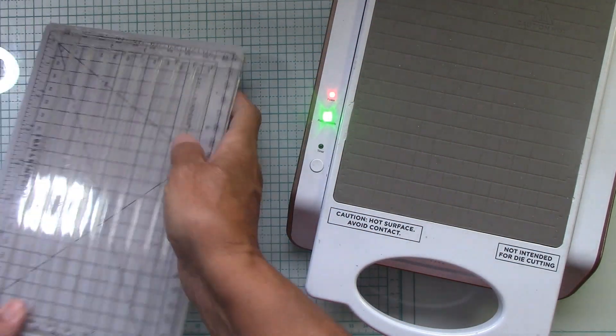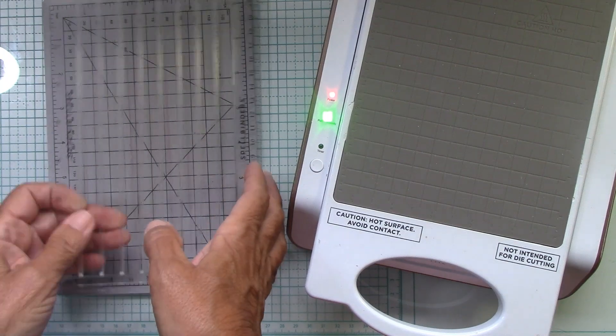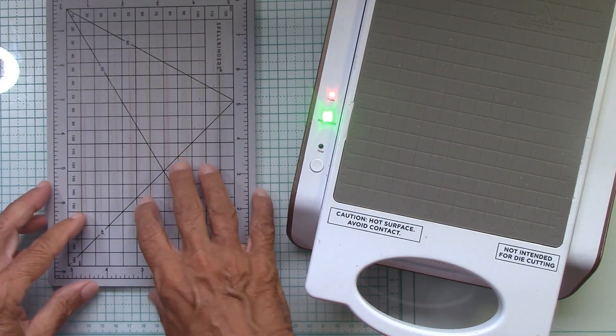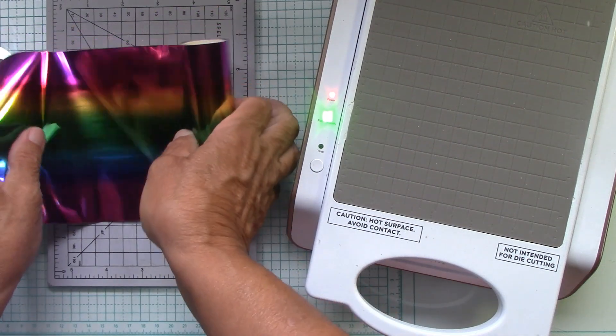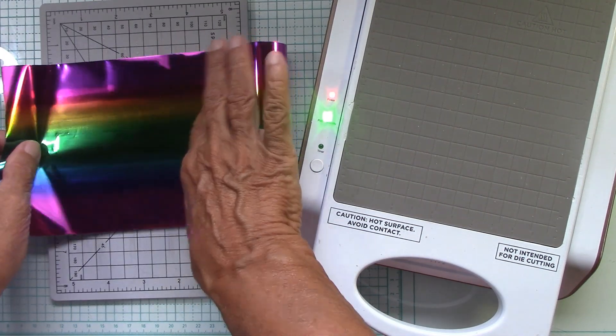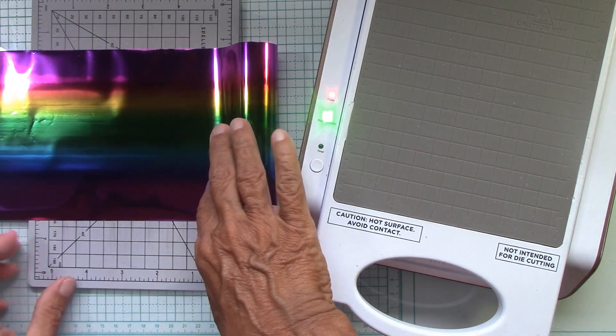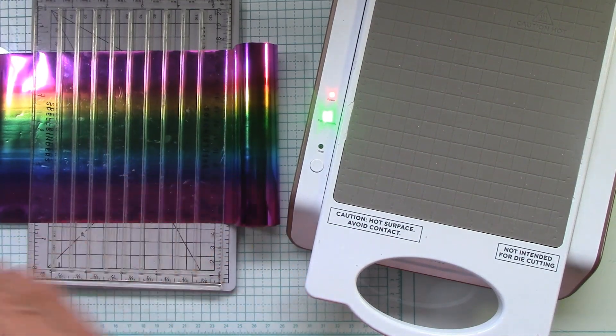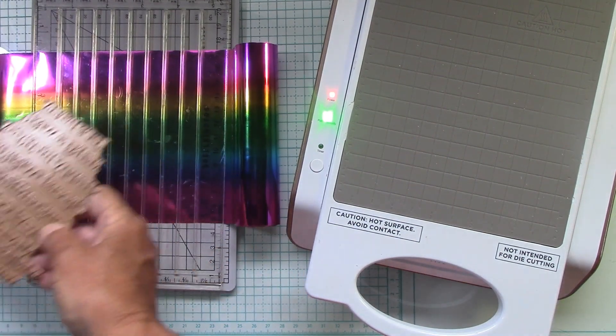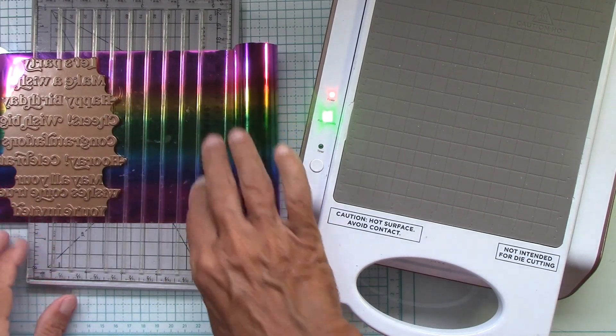So I thought it was going to be good. I'm using the quick trim here, and I'm also using my rainbow foil. I love this. I thought I would just start with getting my hot foiled sentiments ready, and this will actually fit this way.